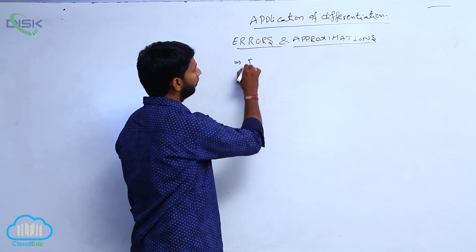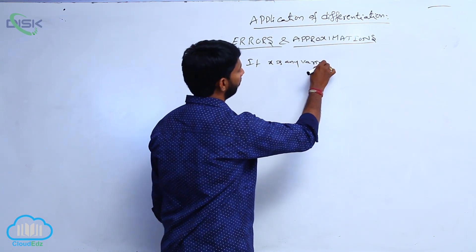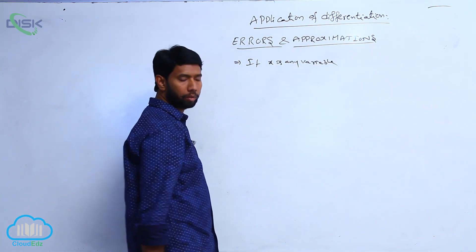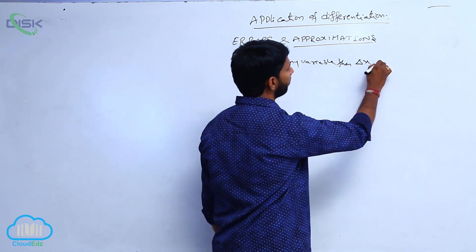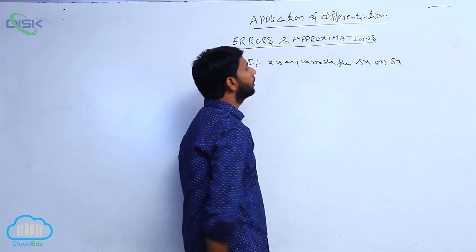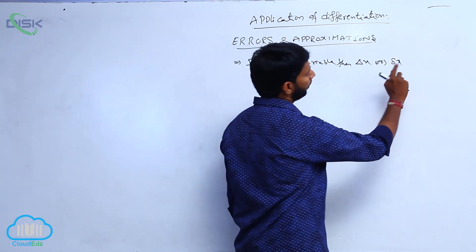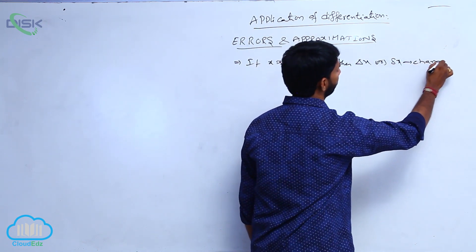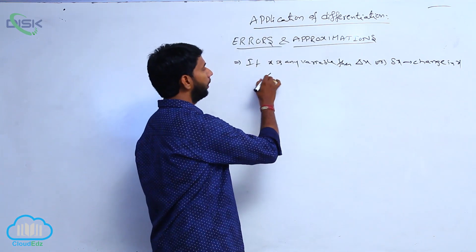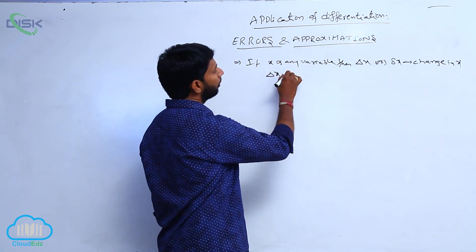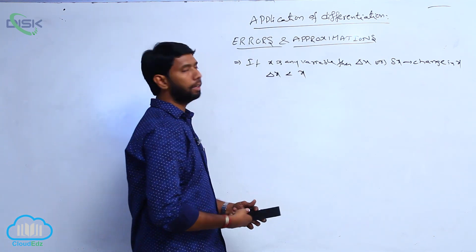Suppose x is any variable, then delta x represents a change in x, and delta x is very small compared with x, because delta x is less than x.